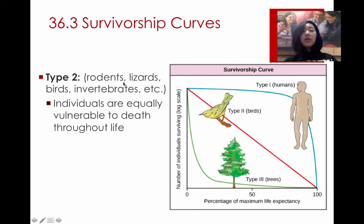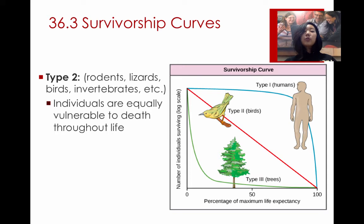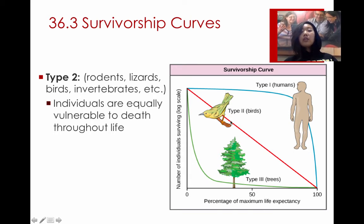The second one — shown here in the red line — is seen in rodents, lizards, and birds. These are kinds of creatures where the individuals are equally vulnerable to death at every point in their life. So the young are not necessarily more likely to die than the old; they have kind of an equal chance. If you're a young bird, you're likely to die at the same rate as an older bird.